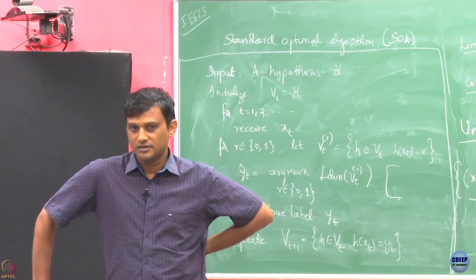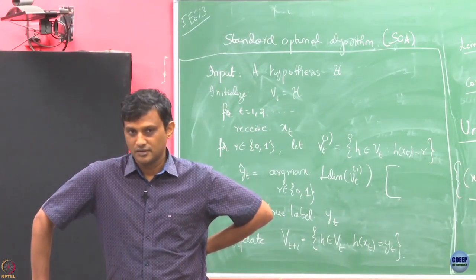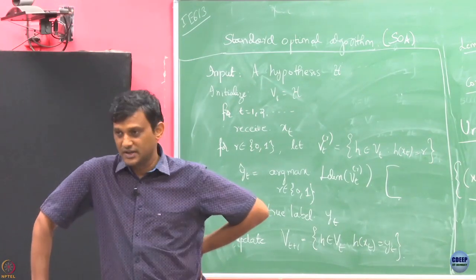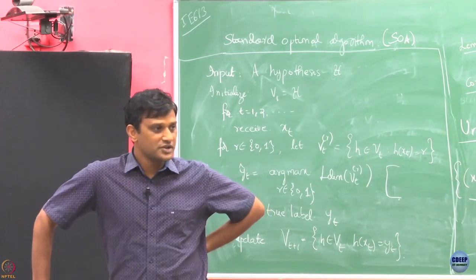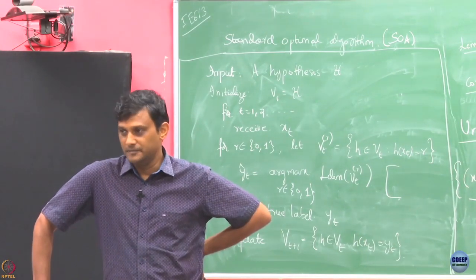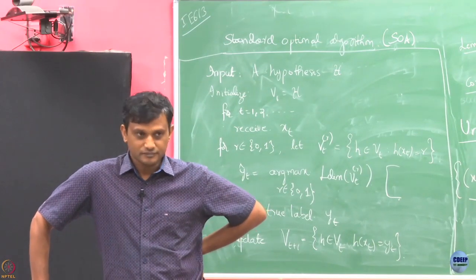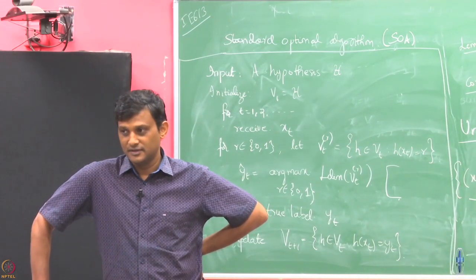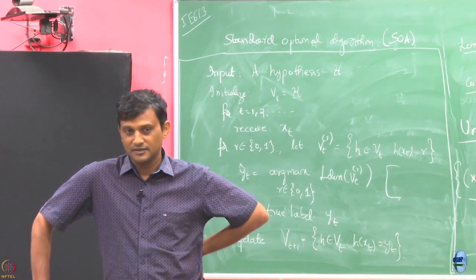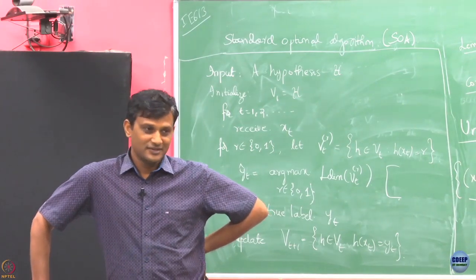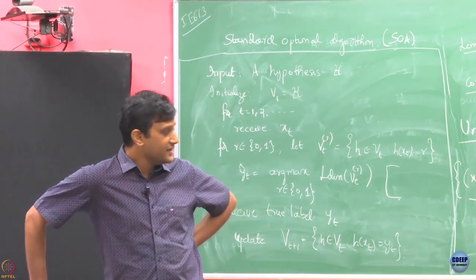Now, what do you want? You want this regret to be small. How small? Zero — can you guarantee zero?